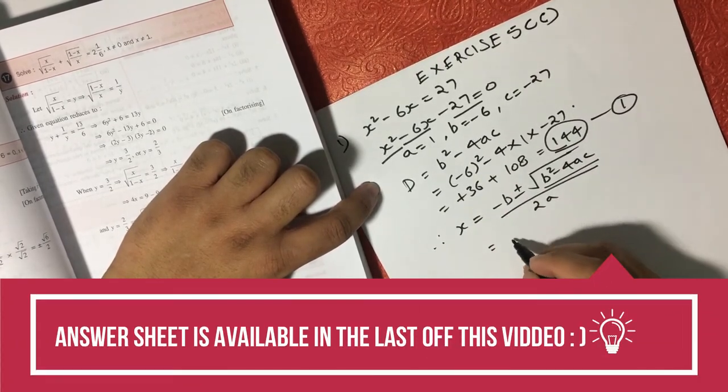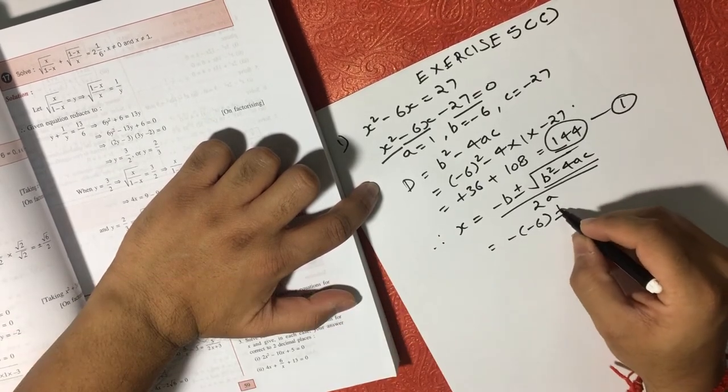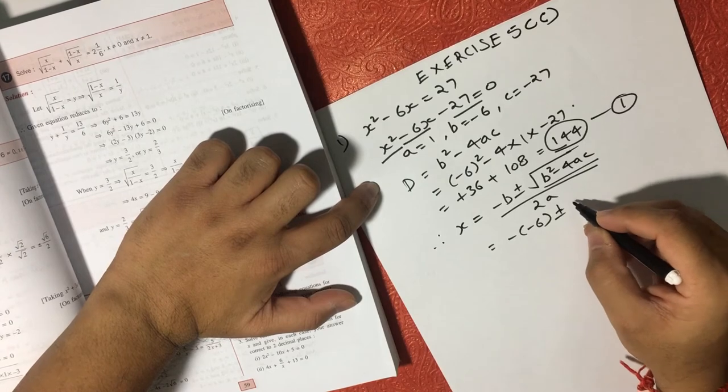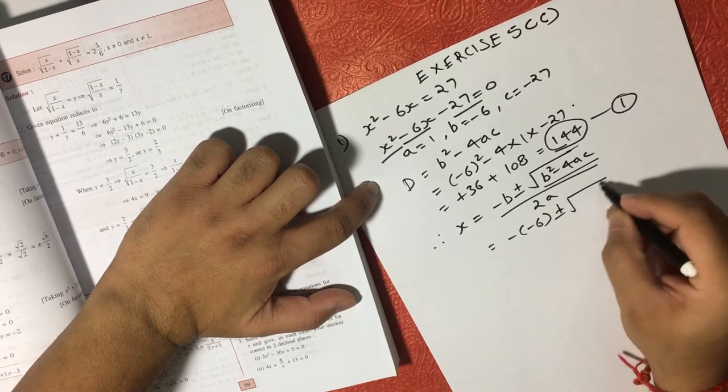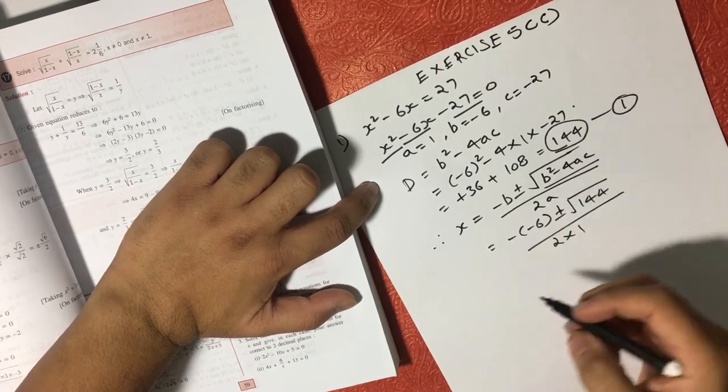So minus B is, B is minus 6 plus minus square root of B square minus 4AC, we already know is 144, oblique 2 into 1, A is 1 here.